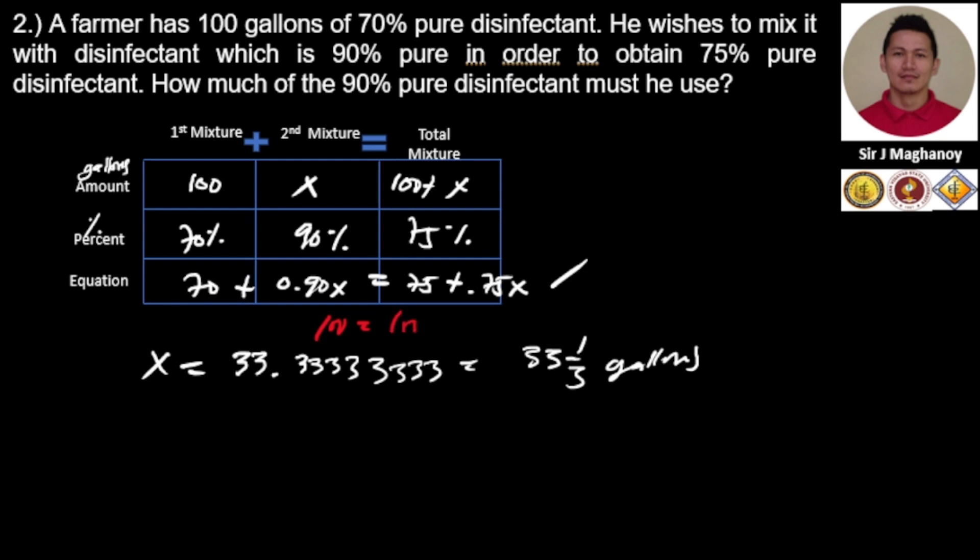We have the same answer, so our equation upon checking is balanced. We can say that the volume of the second mixture, the 90% pure disinfectant, we need 33 and one-third gallons in order to get a 75% solution pure disinfectant. So let's move to our supplement number three.